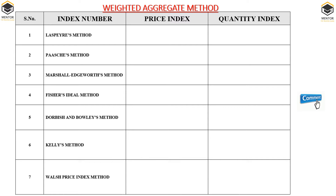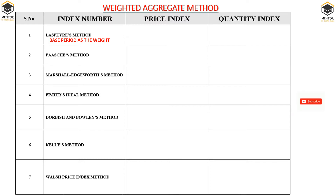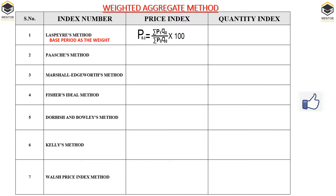The very first we have the Laspeyre's method. Here the author has given the weight to the base year. In price index we give the weight to the base year quantity, and in quantity index we give the weight to the base year price. So here is the formula: P01, which stands for price index of the current year based on base year, is equal to summation P1Q0 divided by summation P0Q0 into 100.